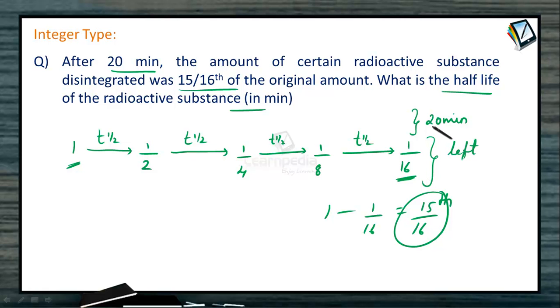So four half-lives is equal to 20 minutes. So definitely one half-life is equal to 5 minutes. So our answer is 5 here.